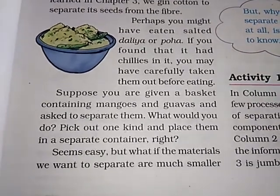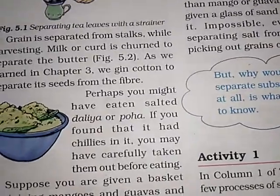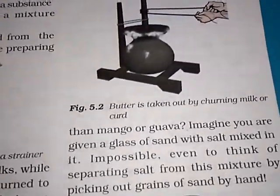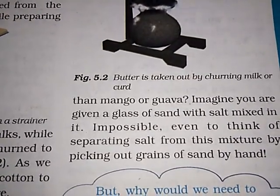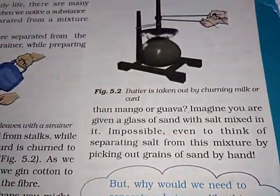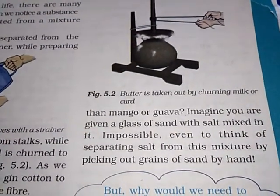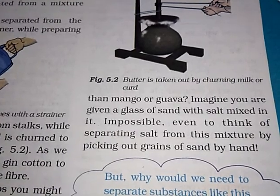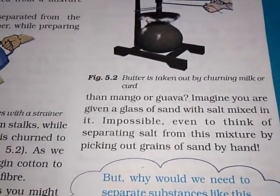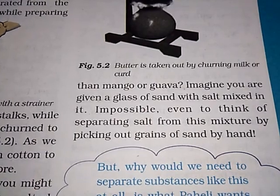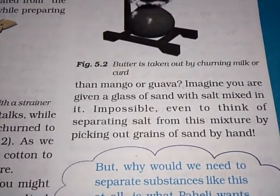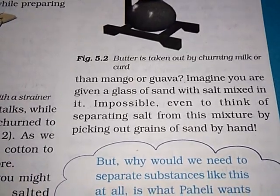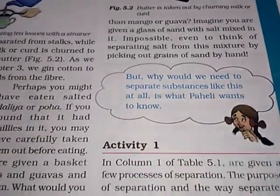That seems easy for bigger materials, but what if the materials are much smaller? While butter is taken out by churning milk or curd — here is an image of churning milk. Now imagine you are given a glass in which salt and sand are mixed together. It is impossible to separate these things by hand one by one.